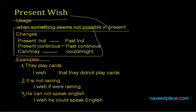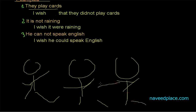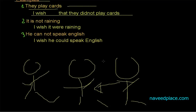So the first example is: 'They play cards.' For example, in your area you see old people playing cards — this is their habit, this is the reality. But what is your wish? 'I wish that they did not play cards.' So the wish is the opposite of reality. The reality is that they play cards, but your wish is that they did not play cards.